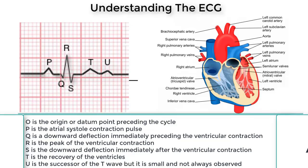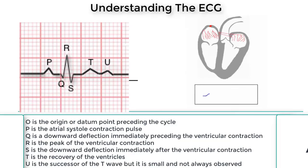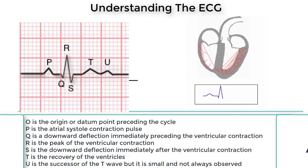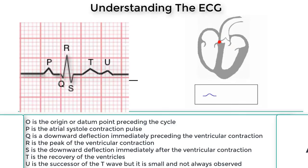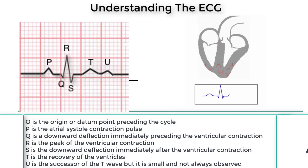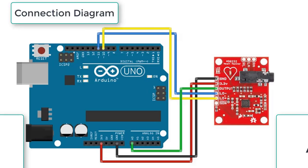The ECG waveform components indicate cardiac electrical activity. The first part of the ECG tracing is called the P wave — it indicates atrial contraction. The QRS complex begins with Q, a small downward deflection, followed by a large upward deflection called the R peak, and then a downward S wave. The QRS complex represents ventricular depolarization and contraction. Finally, the T wave, which is normally a smaller upward waveform, represents ventricular repolarization.